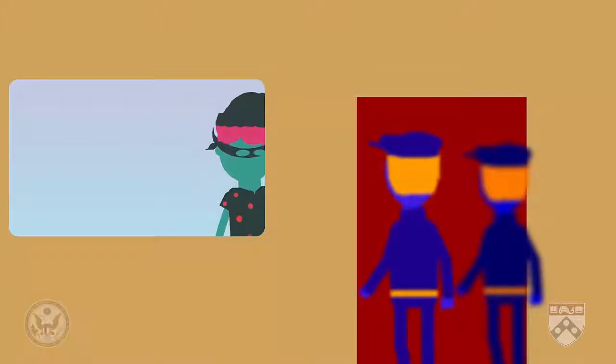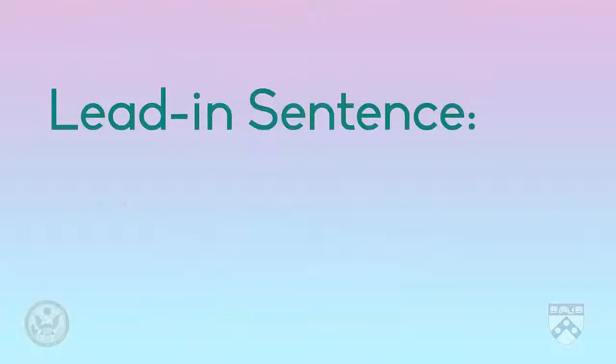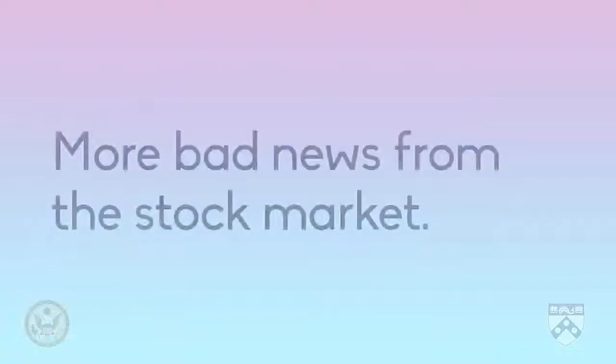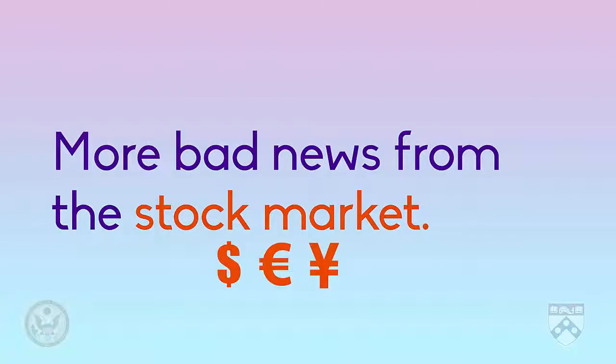The second way that broadcasters try to create a conversational style is by using a lead-in sentence. This is the first sentence of the segment and acts as a summary to let the viewer know the subject and the feeling of the report. For example, if a broadcaster begins by saying 'more bad news from the stock market,' the viewer knows that the subject is financial — stock market — and the feeling is negative: bad news.